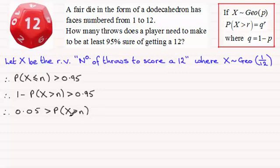And if I swap this round, we've therefore got the probability of X being greater than n must be less than 0.05.